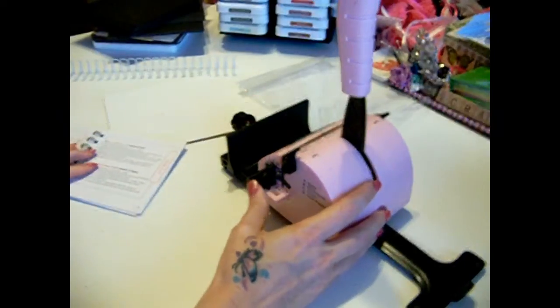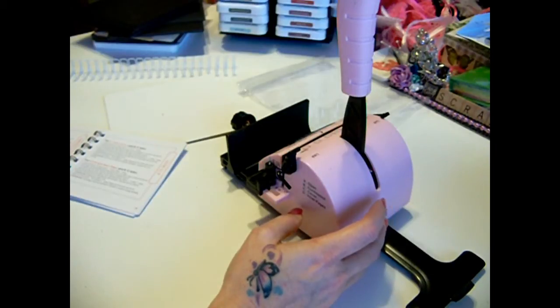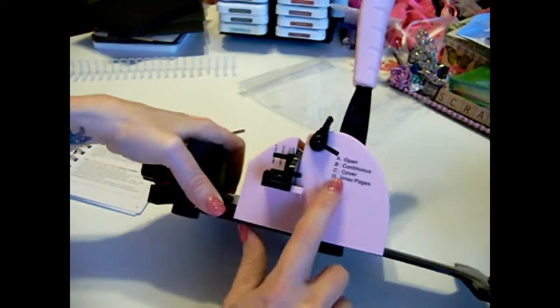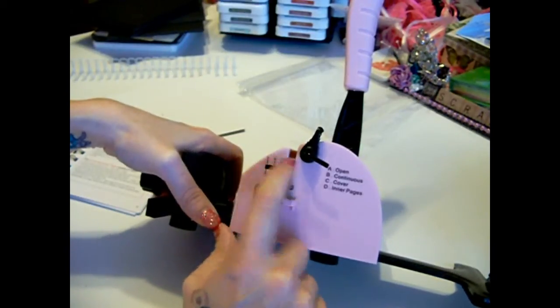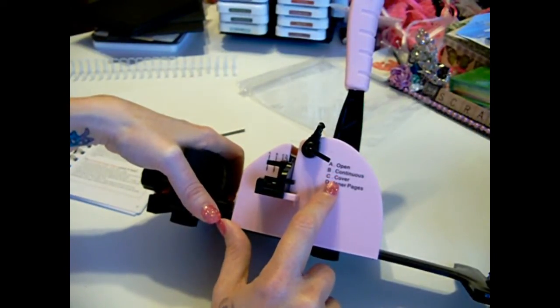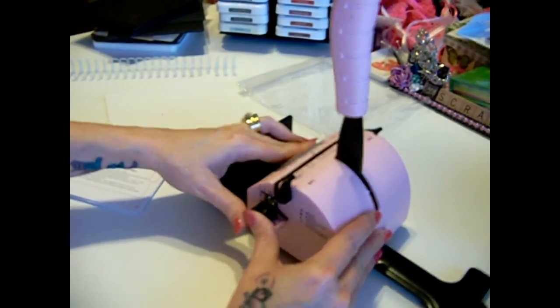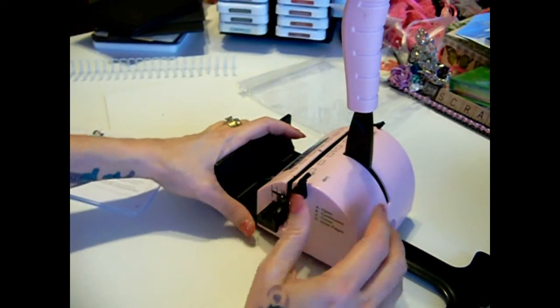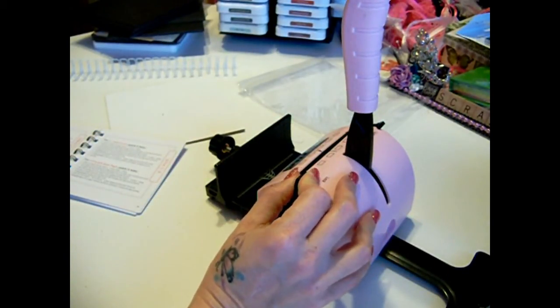So I'm going to do the back side now of this book. So what it tells me to do is it needs ten holes. And I'm just following the instructions it tells me. It says adjust the guide to C for cover. And you see on the side here it says what each letter means: open, continuous, cover, and inner pages. So I'm putting it at C on the side here. And then it tells me to adjust this thing to be open.